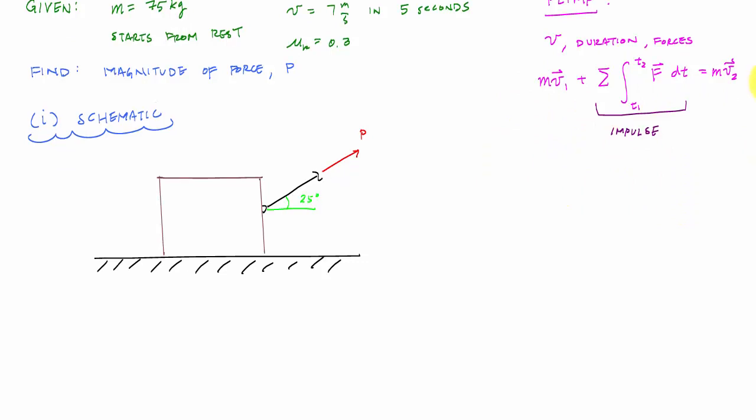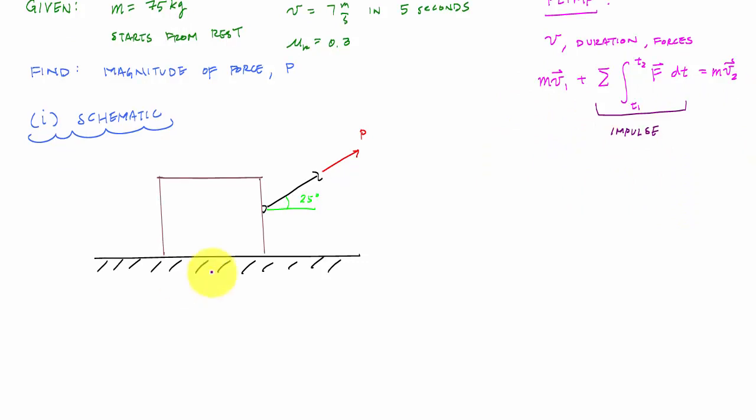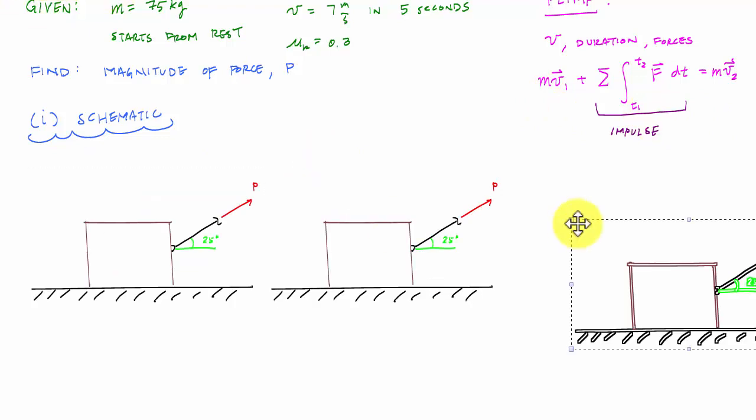So I'm going to draw a schematic. So I have this right here. Sometimes students will jump straight to this, but what I would recommend doing is breaking up the schematic to match the principle of linear impulse and momentum. My schematic is going to be the particle at stage one. What's the velocity at stage one here? So here that velocity, it starts from rest.